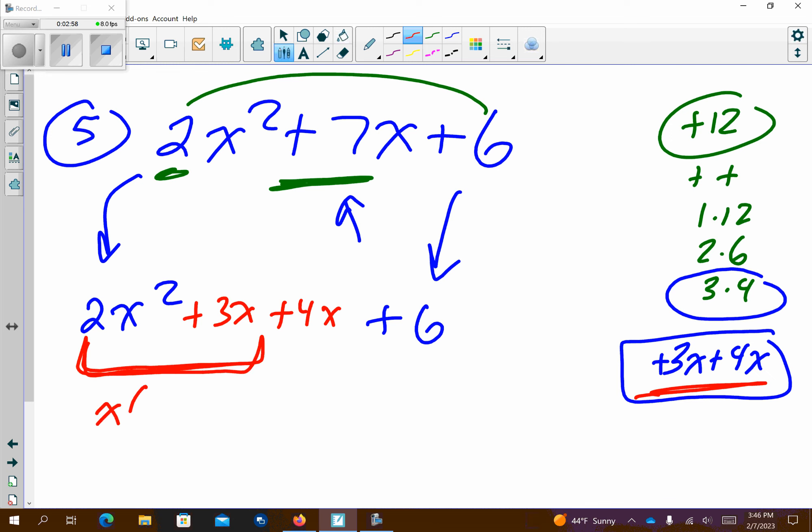What do I have in common between those two terms? It looks like I have an x. If I factor an x out of 2x squared, I'm left with 2x. If I factor an x out of 3x, I have 3. The middle sign comes down. Okay, now what do I have in common between 4 and 6? What is the biggest number that goes into both 4 and 6? 2.